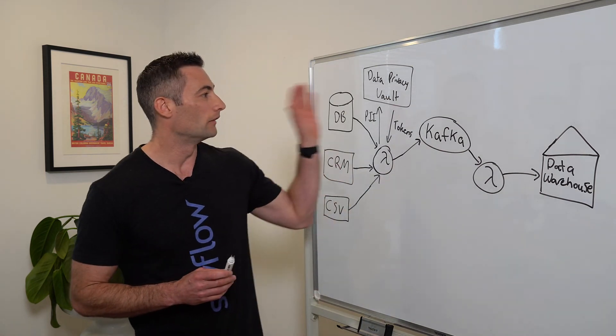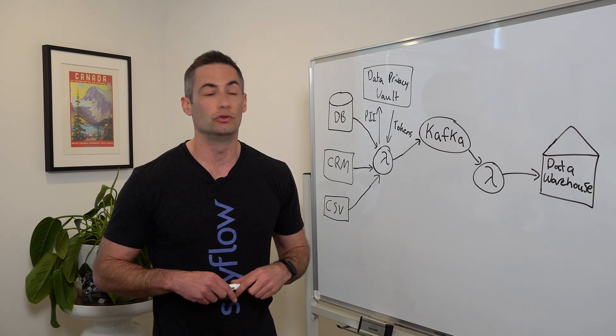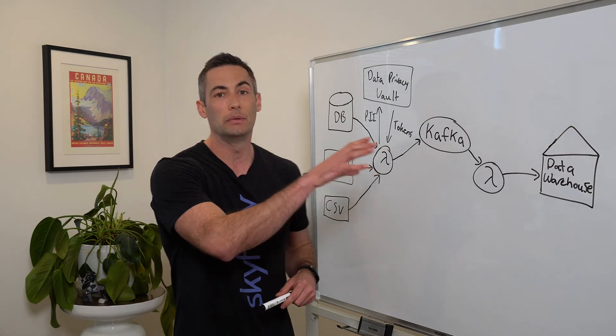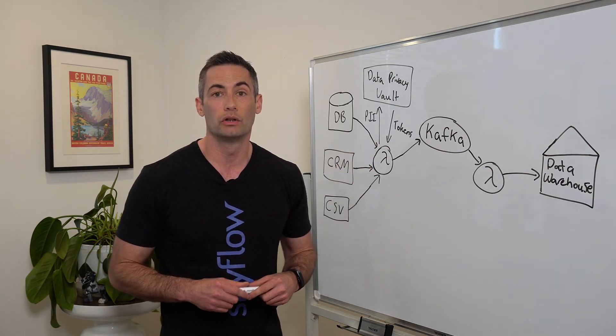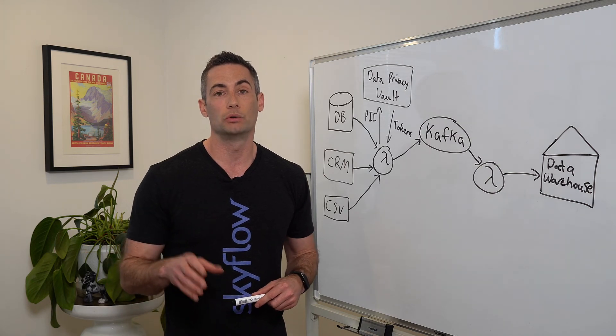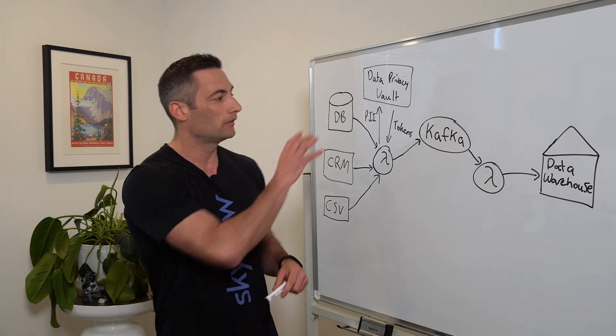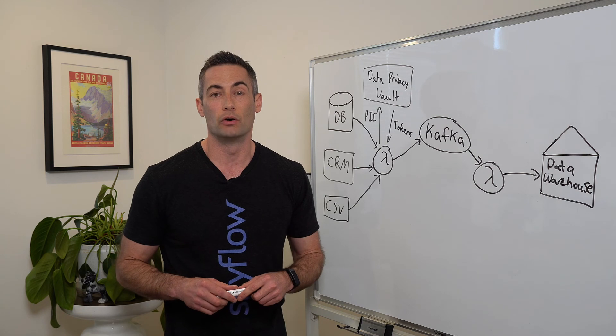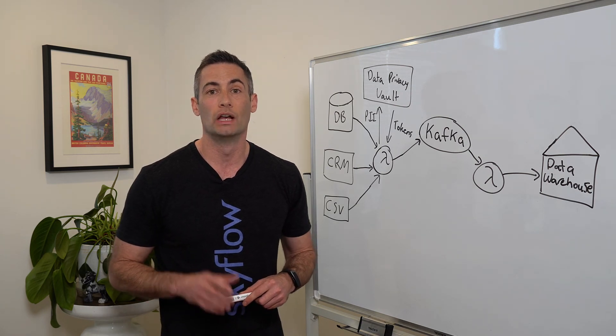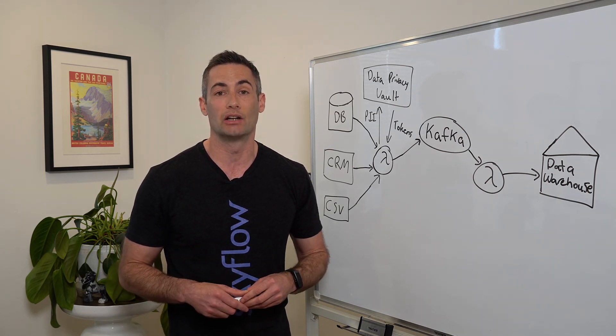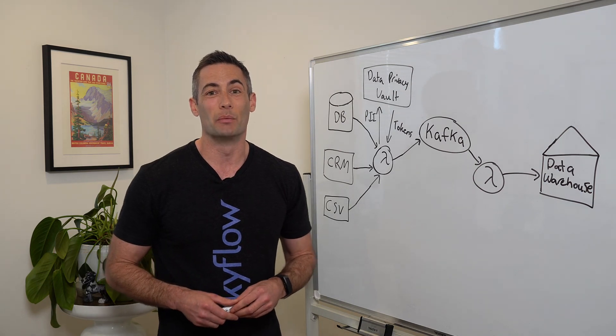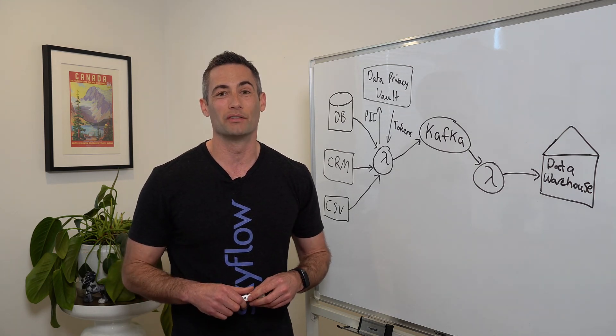So that is a very quick introduction on how you can use a data privacy vault to keep sensitive data out of your data warehouse. If you want to learn more about Skyflow, check us out at skyflow.com. And we have an example implementation of this available for Amazon Web Services that you can find on our GitHub page at github.com/skyflowapi. And remember to move fast, but don't break privacy.